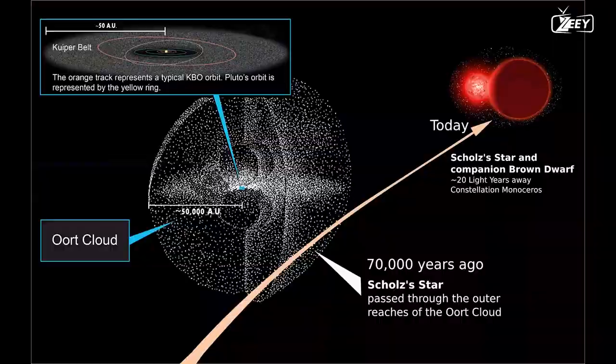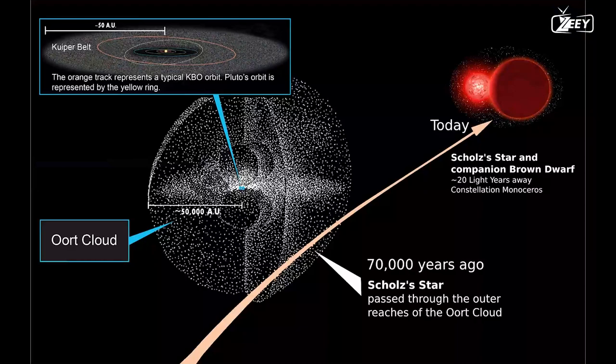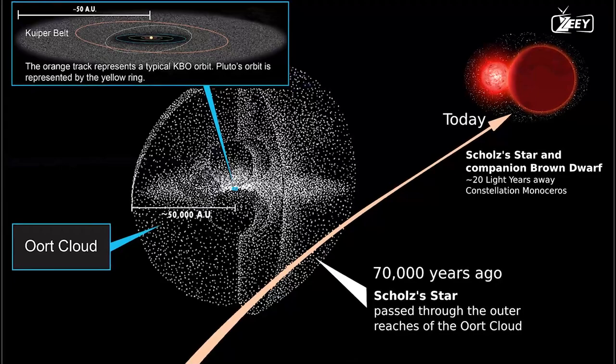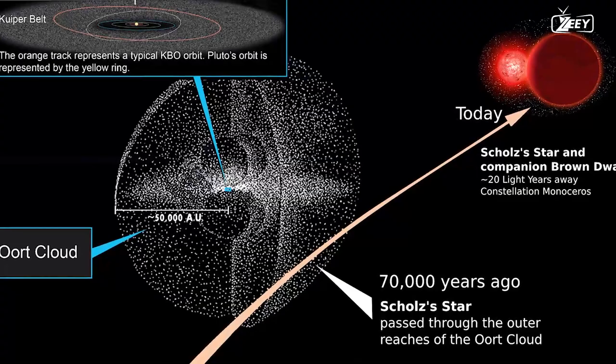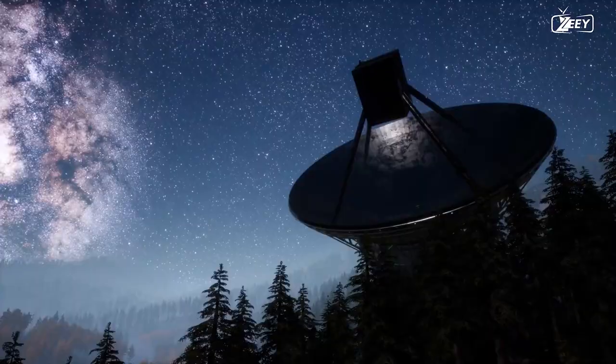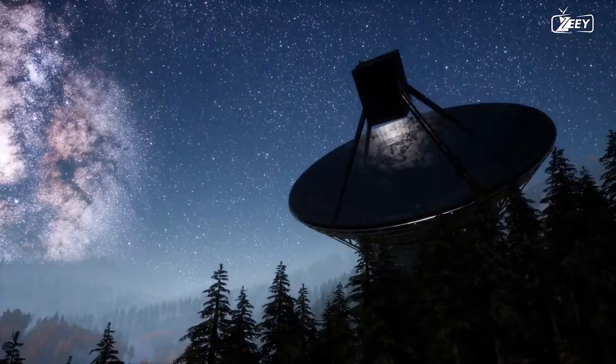Scattered disk objects, on the other hand, are believed to have been ejected from the Kuiper Belt into the Oort Cloud because their orbits are more circular and inclined relative to the solar system's plane. It has not been explicitly observed that the Oort Cloud exists, but its properties can be inferred from the behavior of comets and other objects in the outer solar system.